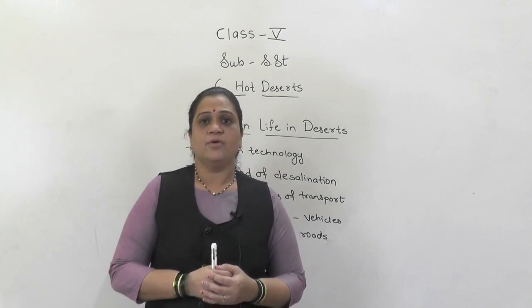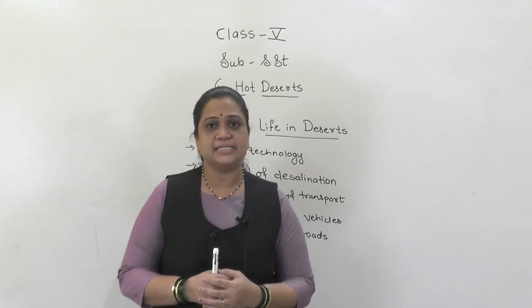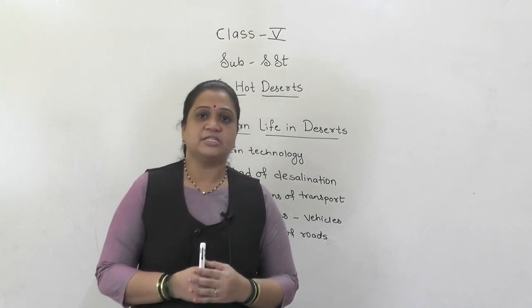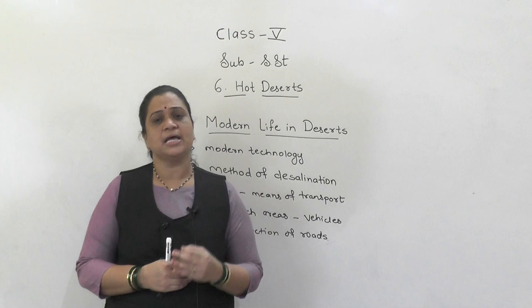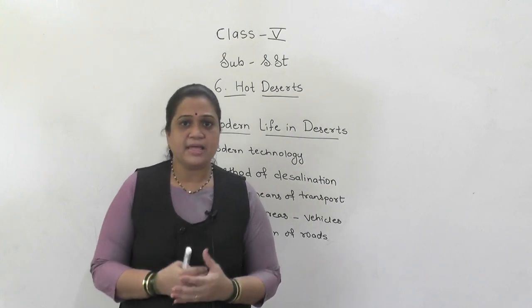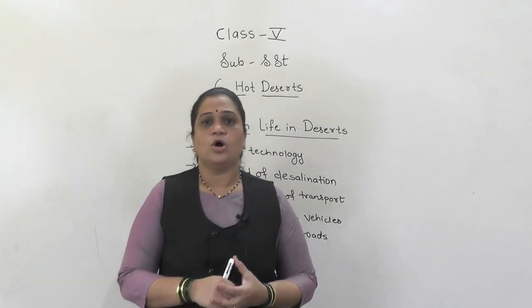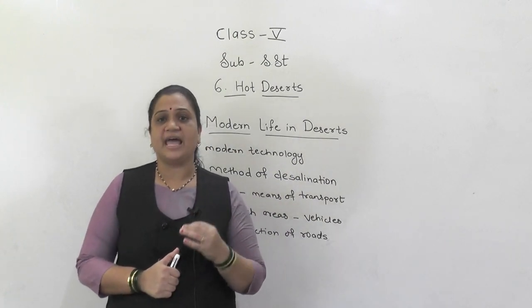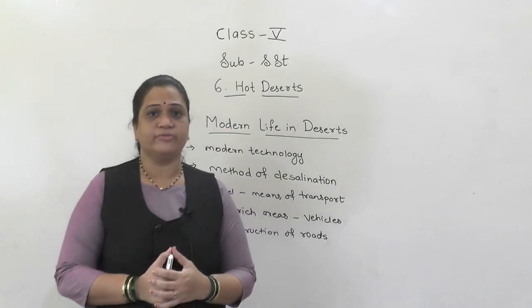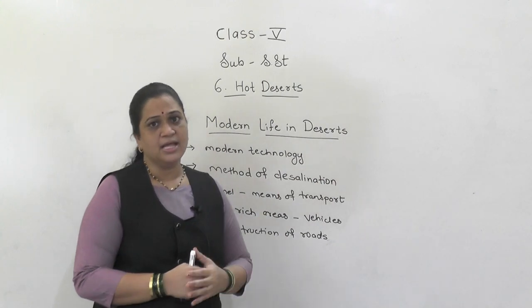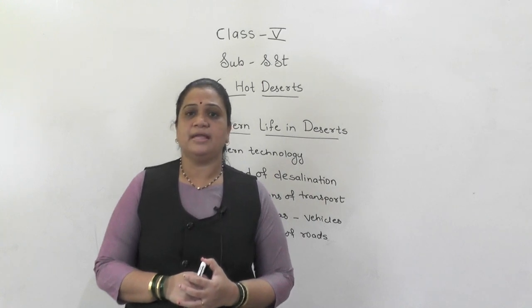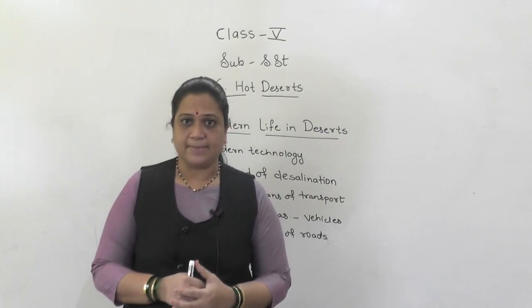Today we have completed the lesson. Let us recall what we studied: the location of hot deserts, the climate in hot deserts, plant life and animal life in the desert region, and human life in the desert in detail. The last point of the lesson was modern life in the desert region. Children, read the lesson thoroughly and try to understand the concept. Thank you.